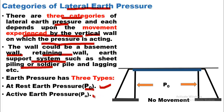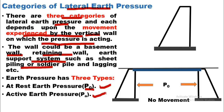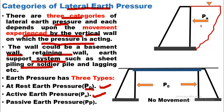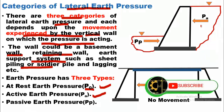The second type is active earth pressure. As you can see over here, if you consider this is a retaining wall and this is the backfill material — which could be soil or water retained by the structure — the active pressure acts in the direction towards the retaining wall. The third type of earth pressure is passive pressure, and it acts in the opposite direction. We will now discuss these three types in detail.